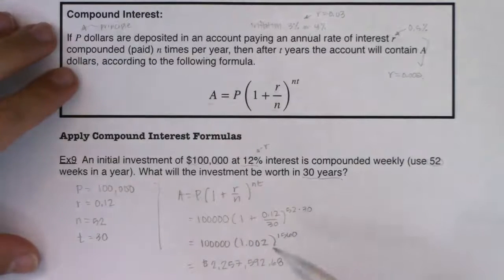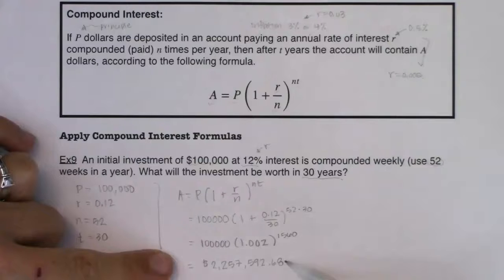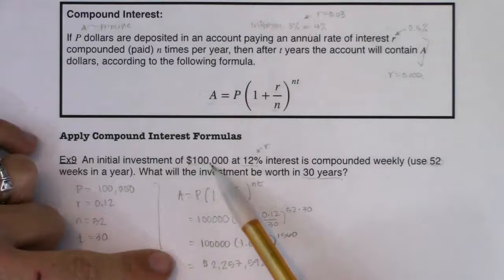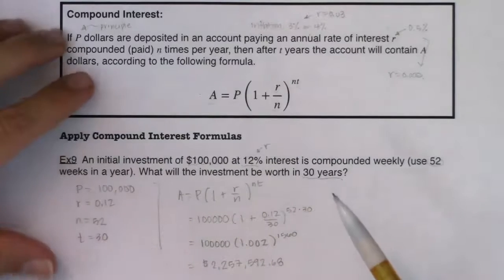Which before I go into the rest of this, that ain't too bad. I would love to have 2.2 million in 30 years. I'm just falling short of that because I don't have $100,000 now and I will never find a 12% interest account.